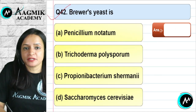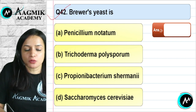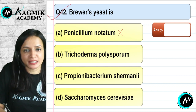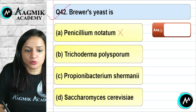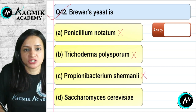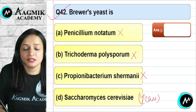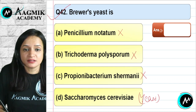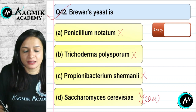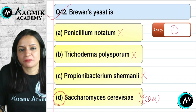Question number 42: Which organism is used in breweries and the baking industry on a large scale? Penicillium notatum is for antibiotic production. Trichoderma polysporum is for cyclosporine A. Propionibacterium shermani is for Swiss cheese. Saccharomyces cerevisiae (brewer's yeast) is the fungus used in the brewing industry for making alcoholic drinks, both distilled and non-distilled. The correct option is D.